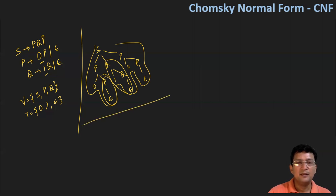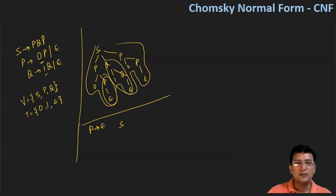Along with this, we now try to remove all null productions — that is, epsilon productions. The first production we remove is P produces epsilon. We try to eliminate P→ε without changing the grammar rule.